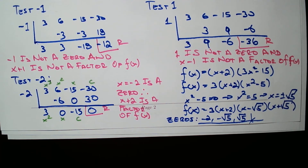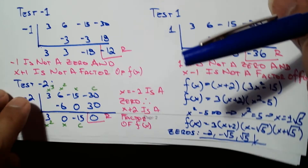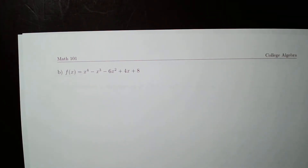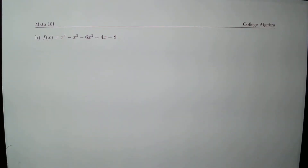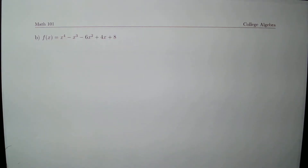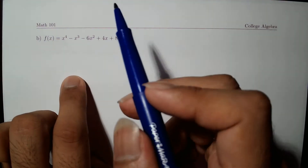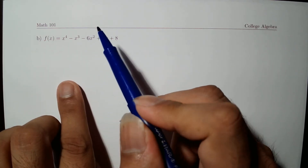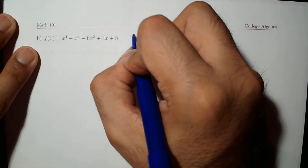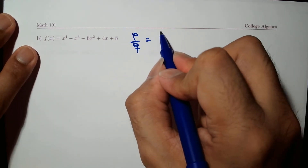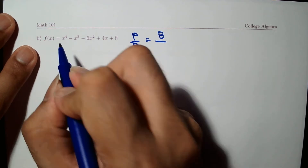Let's do another example that will take the entire page: f of x equals x to the fourth minus x cubed minus 6x squared plus 4x plus 8. There's no way to factor this by grouping since we don't have an even number of terms to group. So we use the rational root theorem: P over Q is 8 over 1, and we list all possible factors of 8.